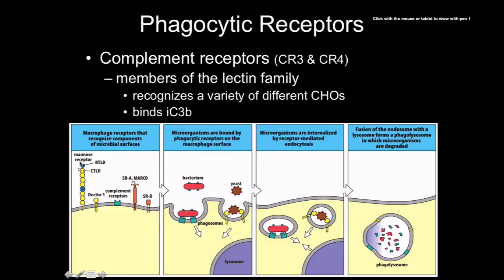Here are pictures showing the mannose receptor with all its C-type lectin domains, and the R-type lectin domains shown in blue — named because they share a similar binding domain with ricin. Ricin inhibits ribosomes. The diagram shows just how large the mannose receptor is, and Dectin-1 with just one C-type binding domain. CR3 and CR4 bind the same thing so they have very similar structures.